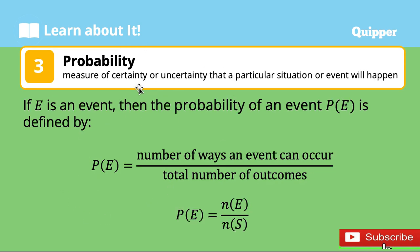Next, we have probability. Probability is a measure of certainty or uncertainty that a particular situation or event will happen. If E is an event, then the probability of an event is defined as P of E — the probability of an event is equal to the number of ways an event can occur divided by the total number of outcomes. In symbols, probability of an event equals N(E) divided by N(S), where N(S) is the total number of outcomes.